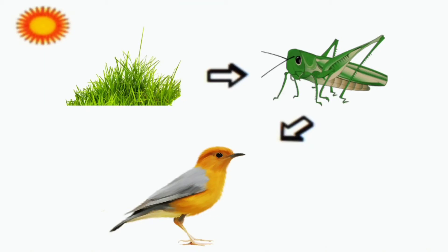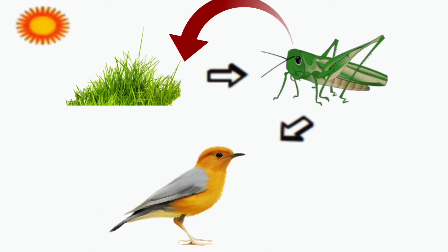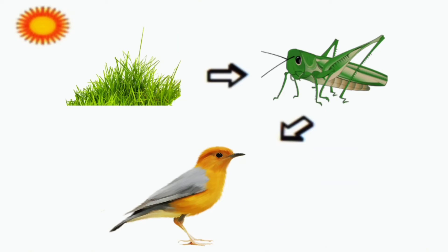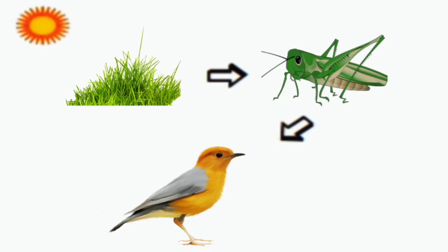Pratyek ghatak apne aage wale ghatak ka bhojan hota hai. Using sunlight, plants make their own food. A grasshopper eats those plants, and a bird eats the grasshopper. It means all these components are connected with each other — that is why we can say they form a chain. Such a chain is called a food chain, and each component is a link in it.